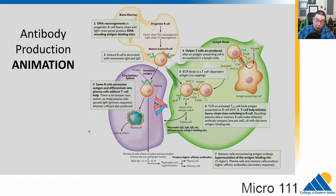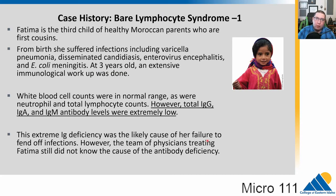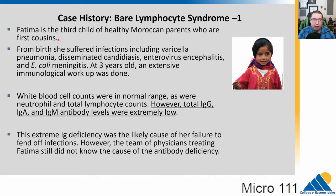That animation went into a lot of detail, but it tied together all the components going into this immune cell reaction. Now let's look at what can happen when there are issues with this system. We have Fatima — she is the third child of healthy Moroccan parents who were first cousins. From birth she has suffered infections, including varicella pneumonia, disseminated candidiasis (a fungal infection), enterovirus encephalitis (a brain infection), and E. coli meningitis — a cerebrospinal fluid infection.